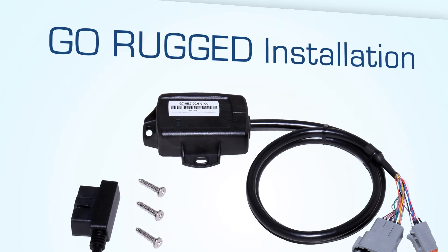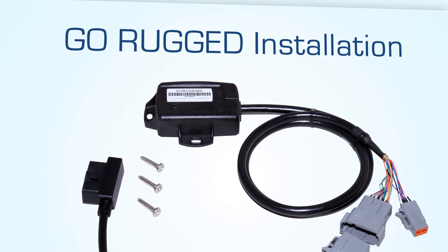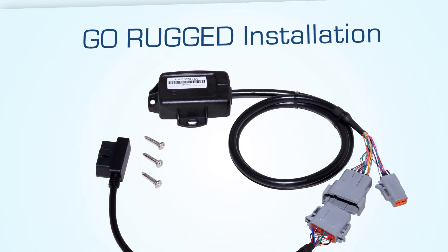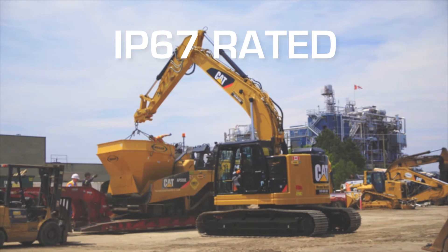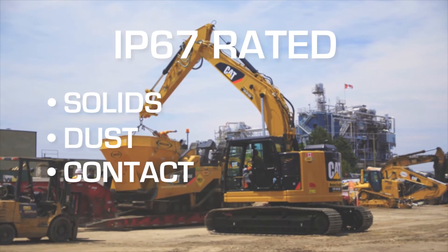The Geotab GoRugged is a ruggedized telematics device that can be used in harsh conditions and be installed externally. The device is IP67 rated for protection against intrusion of solids, dust, contact and water.